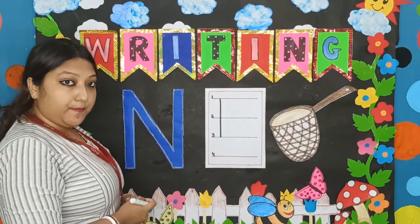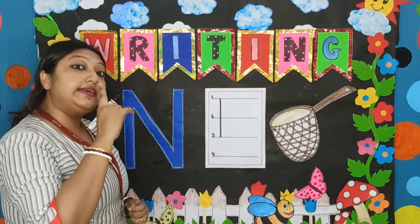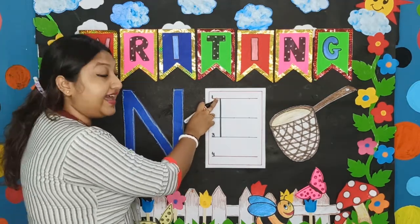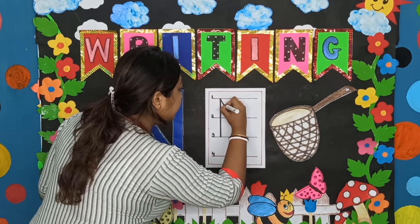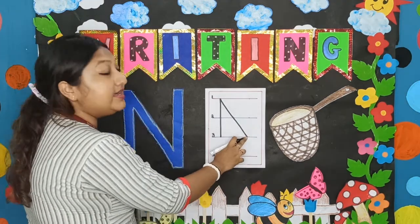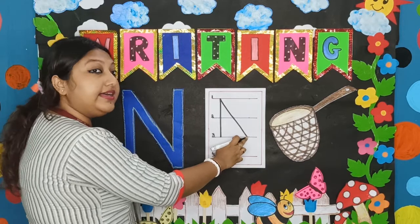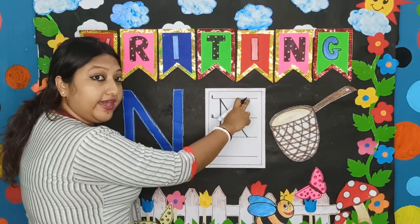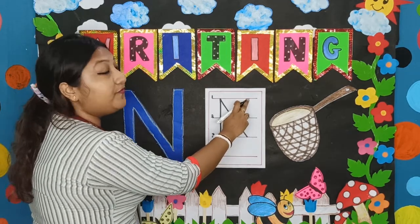Now I will stop. Now we will draw a slanting line, again from the first line where we started our standing line. From here, we will draw a slanting line coming downwards till the third line. Now from the third line, we will again draw a standing line upwards. From the third line, we will draw the standing line till the first line.